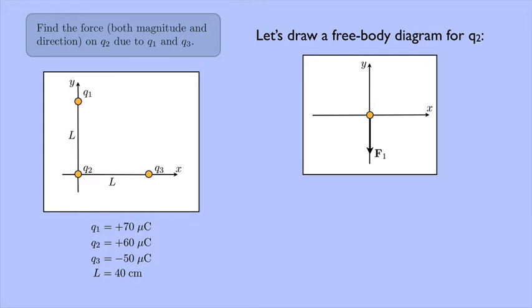Then we have the force from Q3. Q3 is negative. So that's going to be an attractive force. So the force that Q2 feels from Q3 is going to point to the right. So I've labeled these forces F1 and F3 for the charges Q1 and Q3.